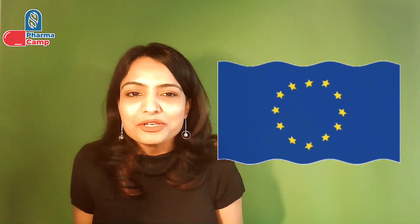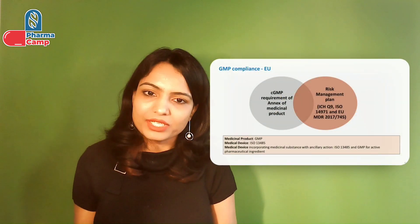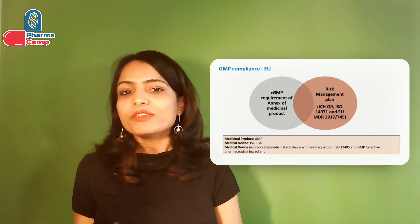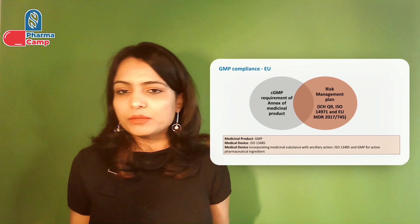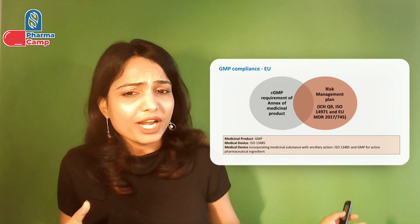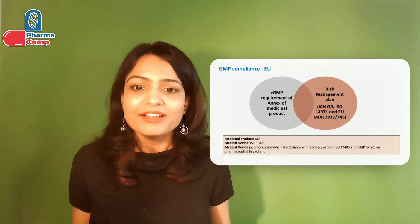Now let's move to the EU. As discussed, in the EU there is no separate regulation for combination products, so your product will either be regulated as a medicinal product or a medical device depending on the primary mode of action. If the primary mode of action is due to the drug, you need to fulfill the general drug GMP requirements along with risk management following the principles of ICH Q9, ICH 14917, and EU MDR. This was the key difference in GMP requirements for combination products in the US and EU.